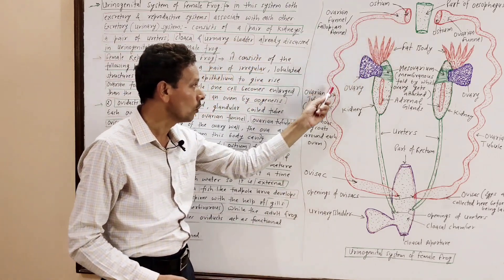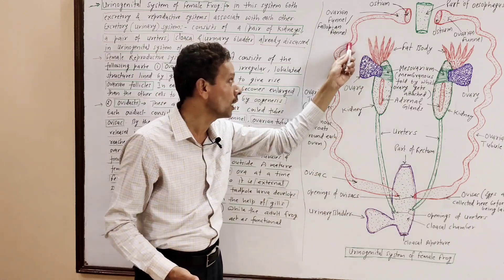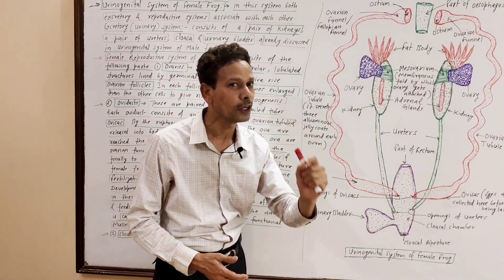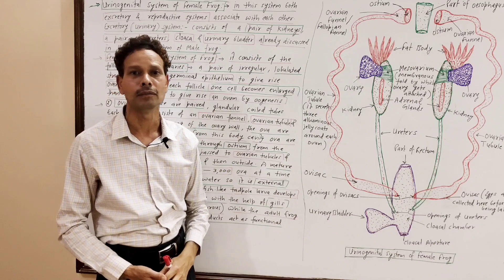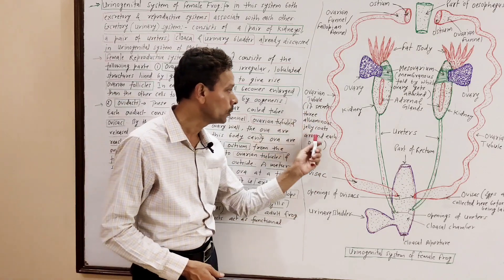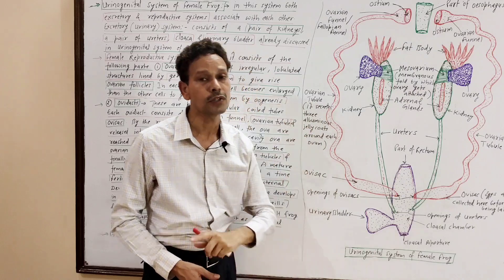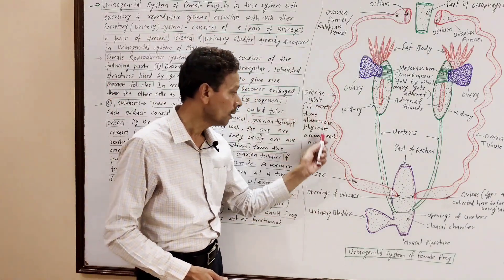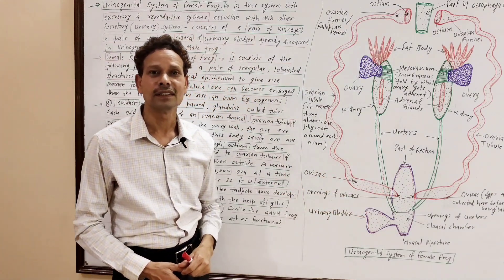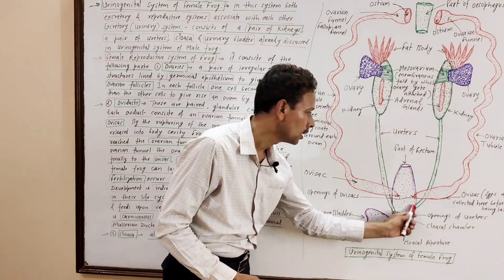The eggs and mature ova are then passed into the second part of the oviduct — the ovarian tubule. This is an elongated, highly coiled tubular structure lined by a glandular epithelium. That epithelium secretes an albuminous substance that produces three albuminous jelly coats over each ovum. The last part of the oviduct is the ovisac, where eggs are collected before being passed into the cloaca.